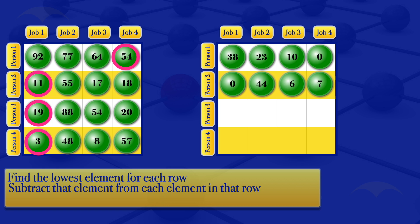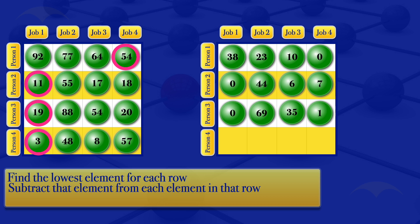For row three, we subtract the highlighted element 19: 19 minus 19 gives 6, 54 minus 19 gives 35, 20 minus 19 gives 1. For row four, we subtract 3: 3 minus 3 gives 0, 48 minus 3 gives 45, 8 minus 3 gives 5, and 57 minus 3 gives 54.